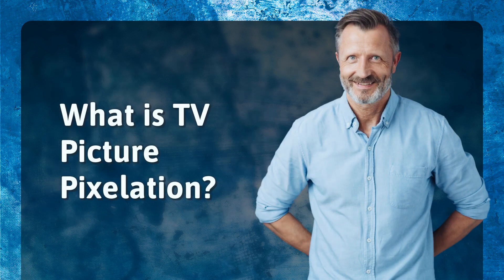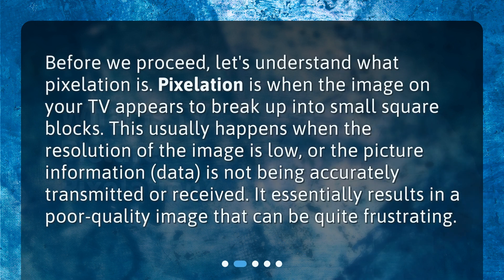What is TV picture pixelation? Before we proceed, let's understand what pixelation is. Pixelation is when the image on your TV appears to break up into small square blocks. This usually happens when the resolution of the image is low, or the picture information and data is not being accurately transmitted or received. It essentially results in a poor quality image that can be quite frustrating.